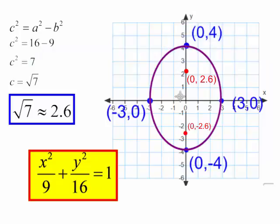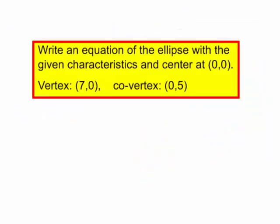Let's try one more problem. Write an equation of the ellipse with the given characteristics and center at (0,0). They want our ellipse to have a vertex at (7,0) and a co-vertex at (0,5).